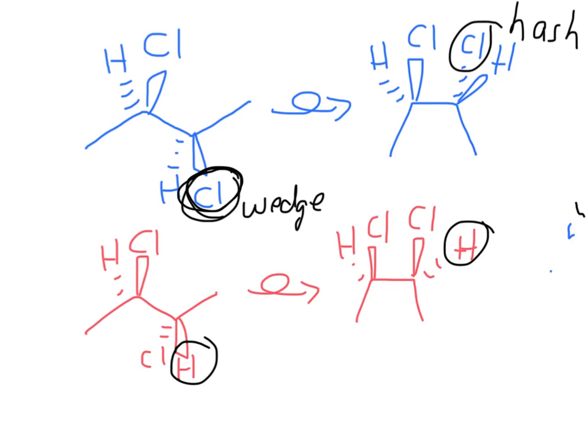In the top blue picture, the chlorine is initially in front. When we do a spin to put things into the eclipsed conformations, we keep the left carbon unchanged. Notice that on the left carbon, what was wedged at the beginning — chlorine wedged in front — that stays wedged after we do the rotation.